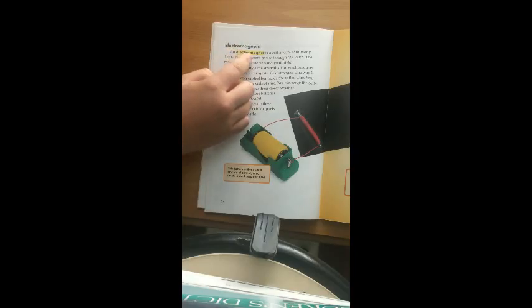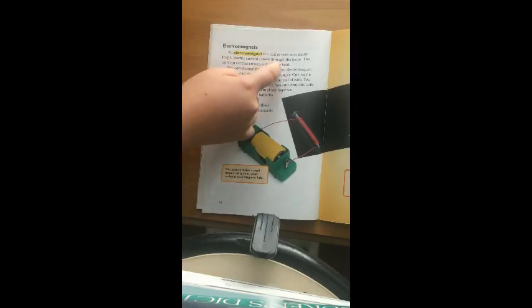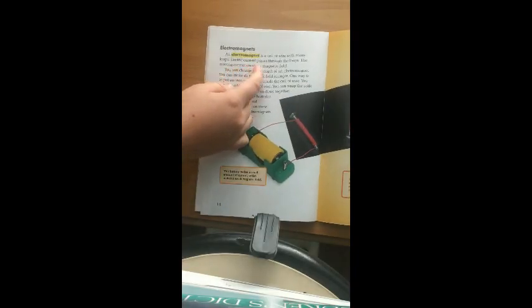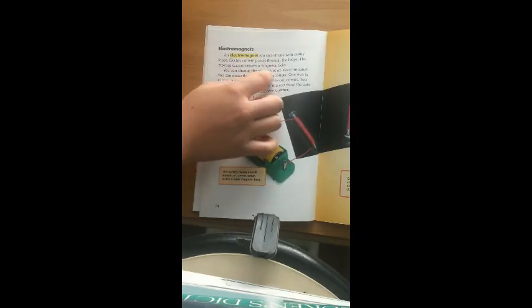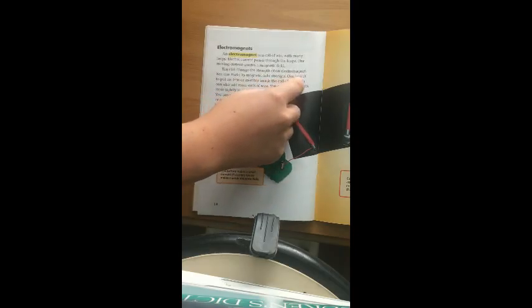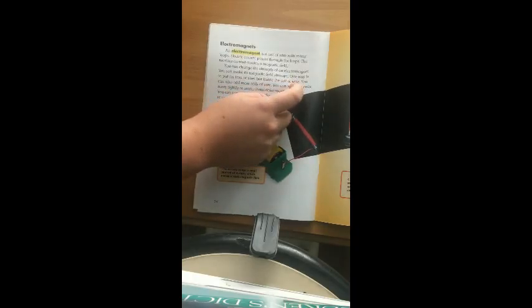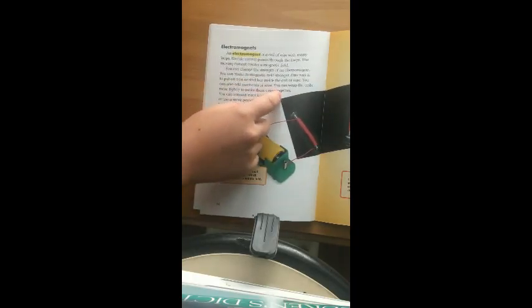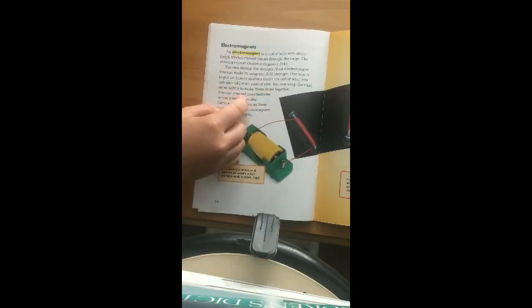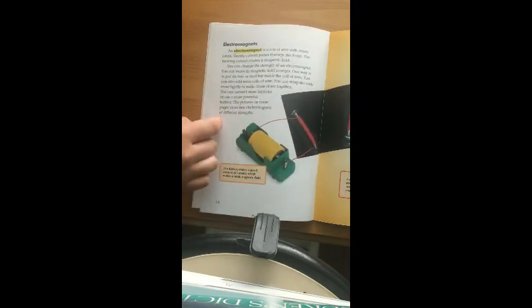Electromagnetism. An electromagnet is a coil of wire with many loops. Electric current passes through the loops. The moving current creates a magnetic field. You can change the strength of an electromagnet. You can make its magnetic field stronger. One way is to put an iron or steel bar inside the coil of wire. You can also add more coils of wire. You can wrap the coils more tightly to make them closer together. You can connect more batteries or use a more powerful battery. The pictures on these pages show two electromagnets of different strengths.